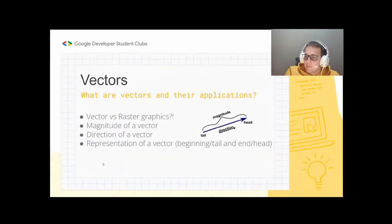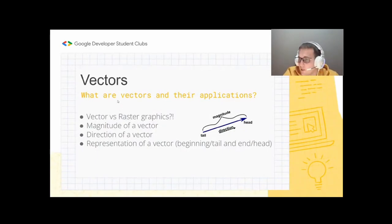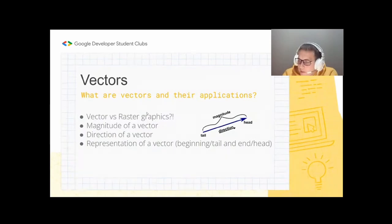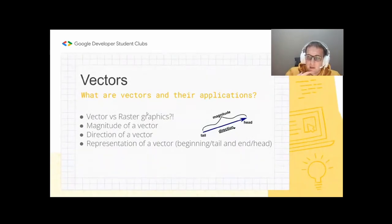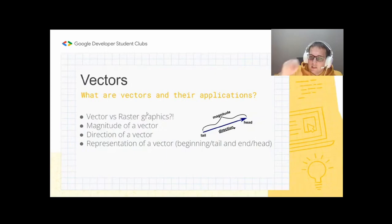A vector has a tail and a head; the direction is toward the head. In the context of computer graphics and VR, it's worth mentioning vector versus raster graphics. Raster graphics uses pixels — if you scale the picture it becomes blurry and loses quality. Vector graphics, however, scales accordingly and keeps its quality because it won't lose resolution when zoomed in or transformed.